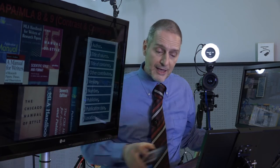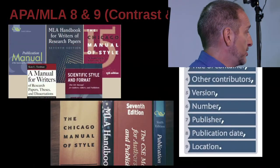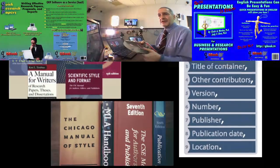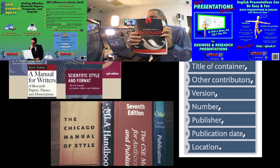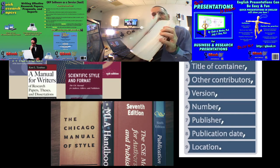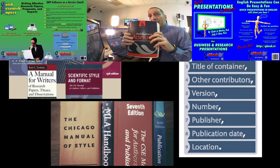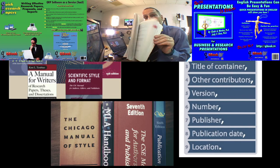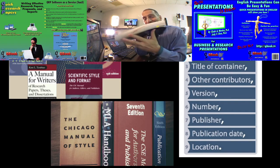I have here the APA Manual. This is an older edition — the fifth edition, the last paper one I bought. I stopped buying paper, but as you can see here, it's huge. It's really huge.